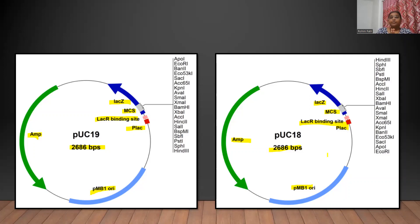pUC-18 and pUC-19 are high copy number plasmids. This is due to the point mutation in the pMB1 origin of replication, which is now defective in the regulation of plasmid replication. The gene which has been mutated is the ROP gene. It has been mutated so that control over replication is lost, and both plasmids are now present in a high copy number.